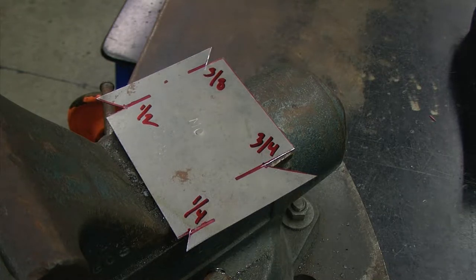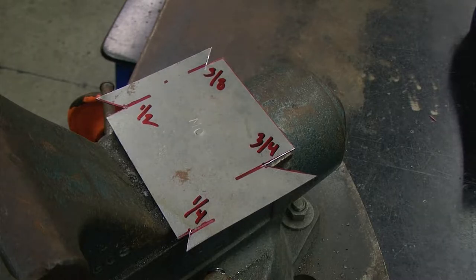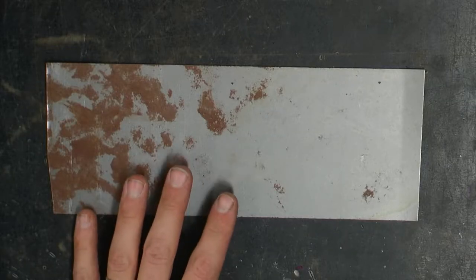In this video we will be creating our sheet metal marking gauge. I'm starting with a piece of 20 gauge mild steel.